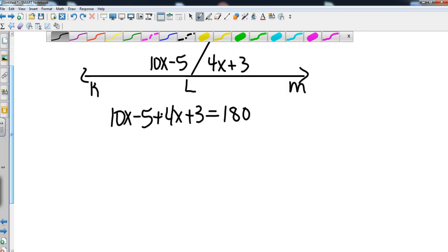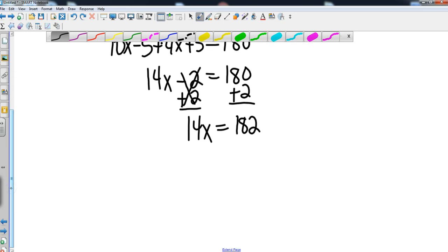Again combining our like terms at that point, so that's going to give me 14x minus 2 equals 180. Back to our algebra roots, that gives me 14x equals 182. And when I divide both sides by 14, that's going to go in 13 total times.